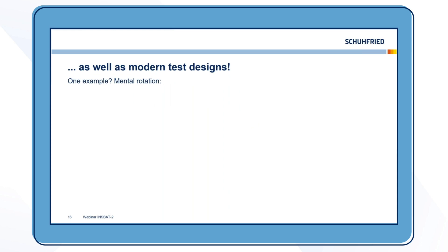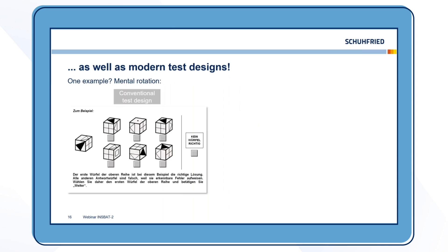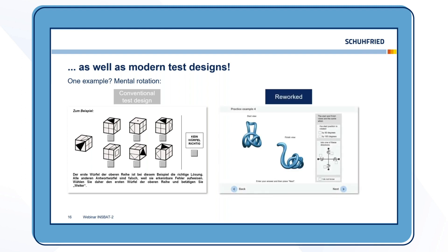We have more modern test designs as well. One example would be mental rotation. You can see the conventional test design, which is cubes with different patterns on their sides. You probably all know this design. You have to figure out if you can rotate one of the cubes to look like the one on the left. This has been around for well over 40 years and we reworked it. Now it looks like this. It measures the same thing, but it's completely new. You have a figure and you have to figure out how to rotate this figure in the start view to look like the finished view on the bottom right. This also adds to test safety, since for the conventional design, there's a lot of item material available on the web and you can train it quite easily. With these new figures, that's very hard to do.